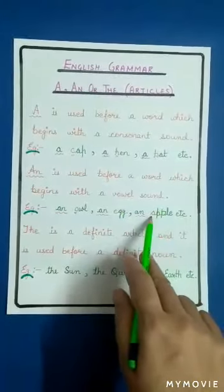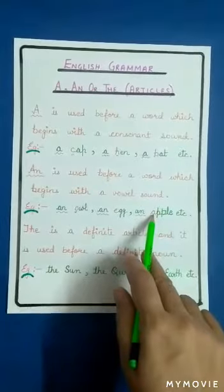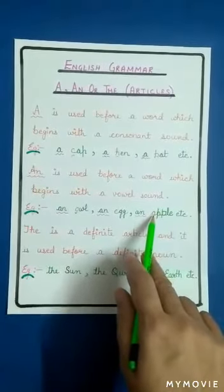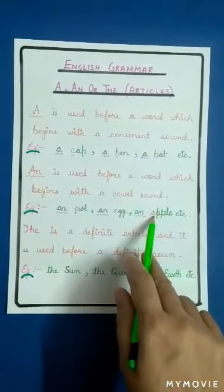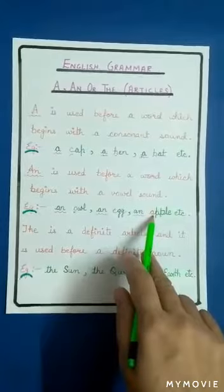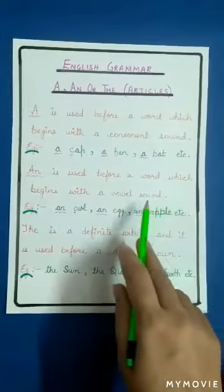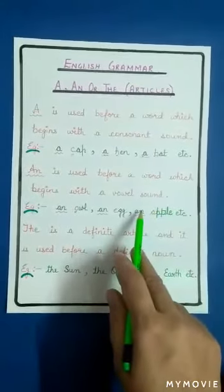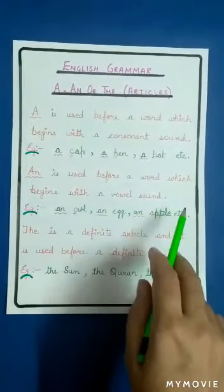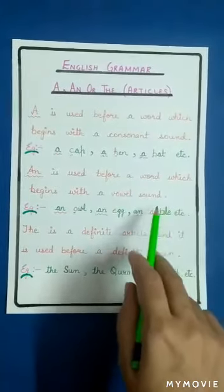'Apple' starts with the letter 'a'. Apple kisse start hota hai? 'A' se. Aur isliye humne uske aage bhi 'an' lagaya hai, because 'a' is a vowel.